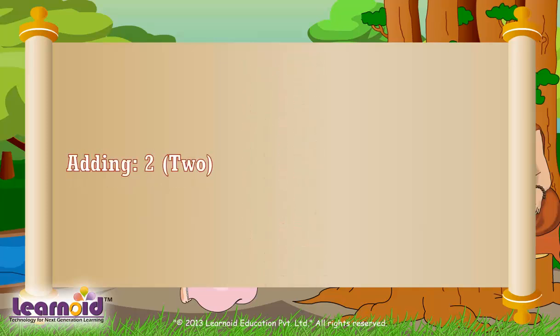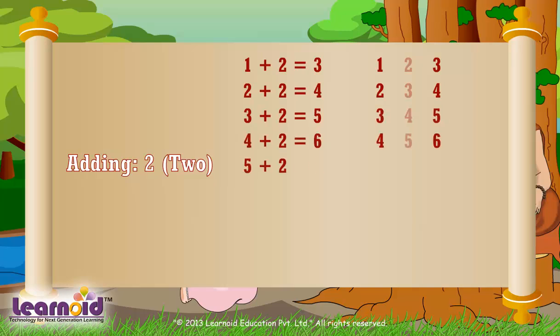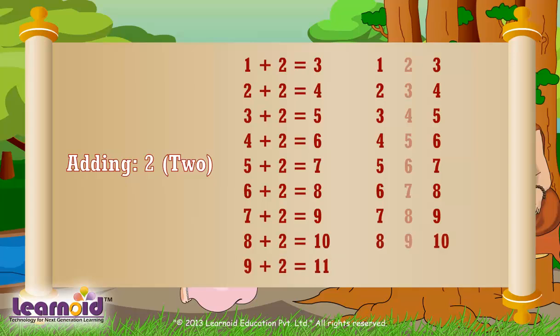Now learn adding 2. To add 2, skip the next number and then give the answer. 1 plus 2 equals 3, 2 plus 2 equals 4, 3 plus 2 equals 5, 4 plus 2 equals 6, 5 plus 2 equals 7, 6 plus 2 equals 8, 7 plus 2 equals 9, 8 plus 2 equals 10, 9 plus 2 equals 11.